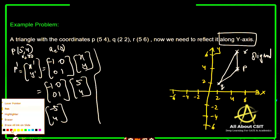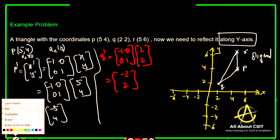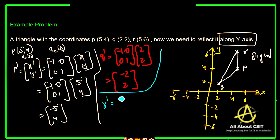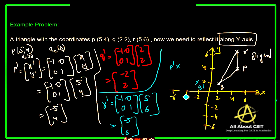Next, Q-dash: [-1, 0; 0, 1] times [2, 2] gives minus 2 and 2, so Q-dash is (-2, 2). Then R-dash: [-1, 0; 0, 1] times [5, 6] gives minus 5 and 6, so R-dash is (-5, 6). These are all the new coordinates. Now applying them on the graph: P-dash at (-5, 4), Q-dash at (-2, 2), and R-dash at (-5, 6). Connecting them forms the reflected triangle.